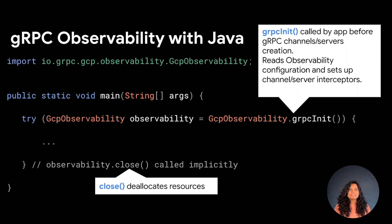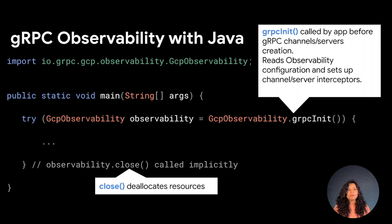Let's look at this Java code snippet for an actual example. In your application class main method, you call gcpobservability.grpcinit to initialize observability. Based on the configuration, observability data will be generated and exported. Instead of writing thousands of lines of code, gRPC makes it easier for you to have visibility by adding just two lines of code. So what are you waiting for? Start using gRPC observability today.